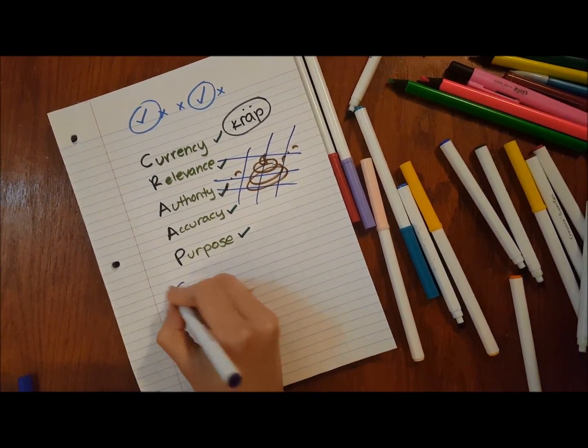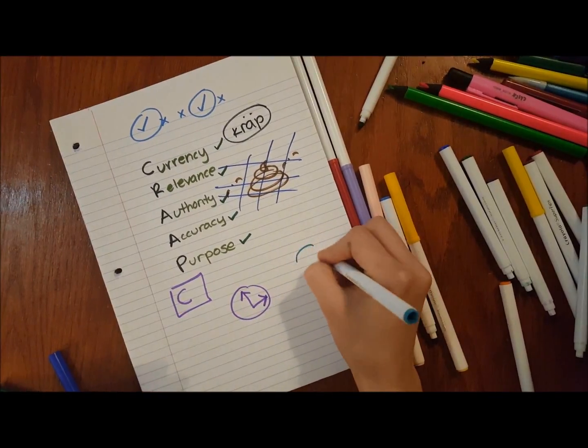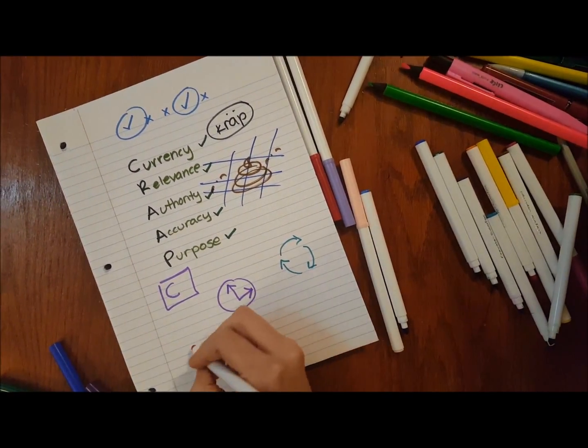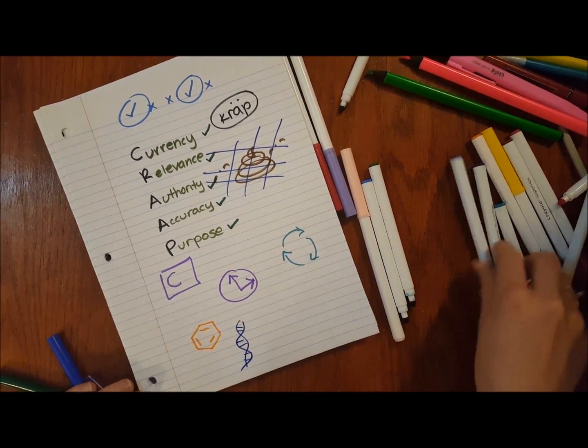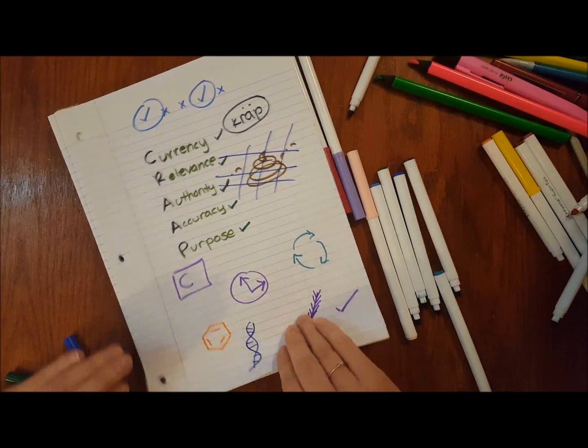For determining currency, you must first identify when the information was published and whether it has been revised or updated. You also need to determine whether your topic requires current information. If you are writing a scientific paper, you want the most current and up-to-date information. But if you are analyzing a historical event, for example, older sources will still be useful.